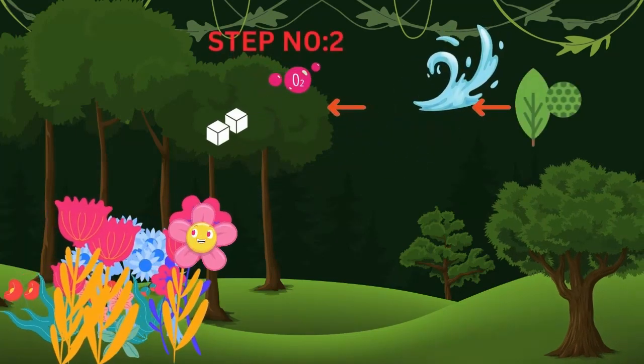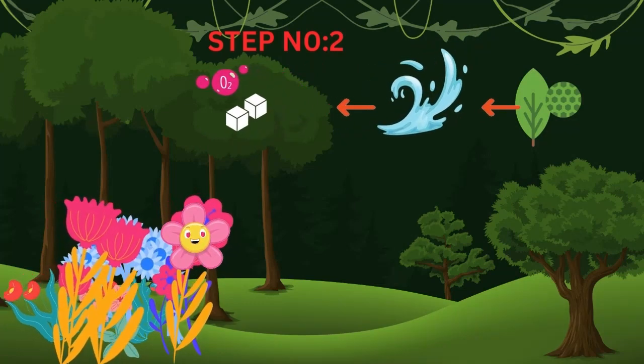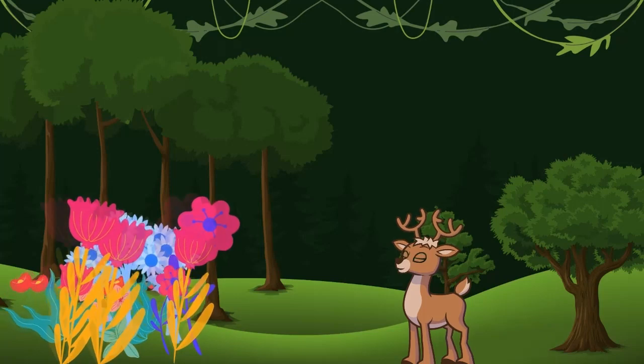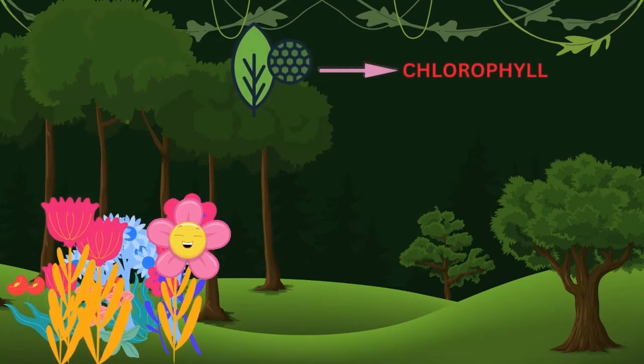Step number two: We have chlorophyll that absorbs sunlight from the sun and converts water into oxygen and glucose. What is chlorophyll? Chlorophyll is a green pigment that also gives green color to the plants.